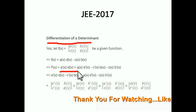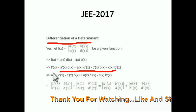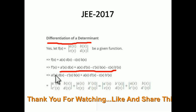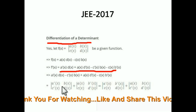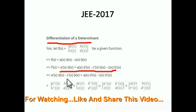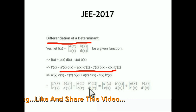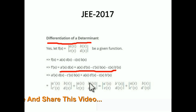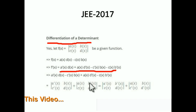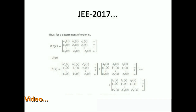For an n×n determinant with rows like a1(x), b1(x), c1(x)... up to an(x), bn(x), cn(x), you can again use two methods — by the column or by the row. If we do it by the row, differentiate the first row — a1'(x), b1'(x), c1'(x) — with all other rows steady.